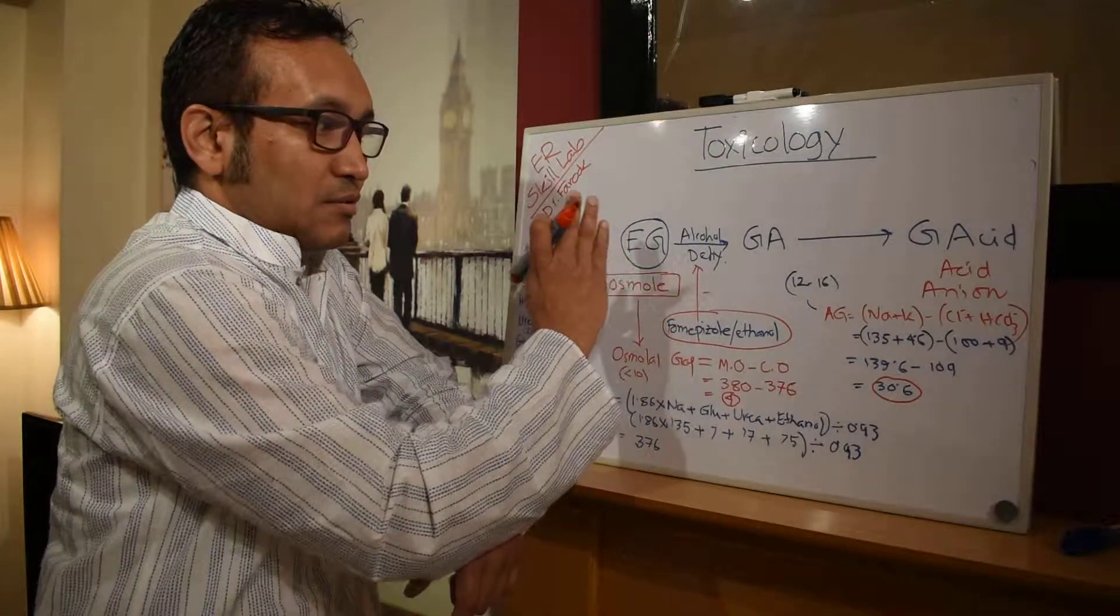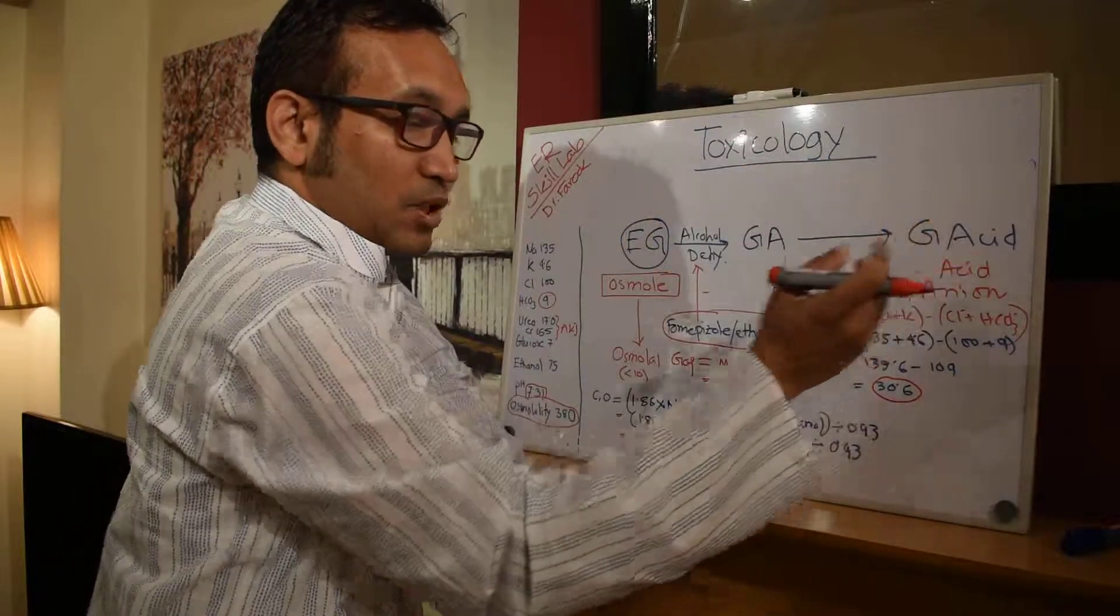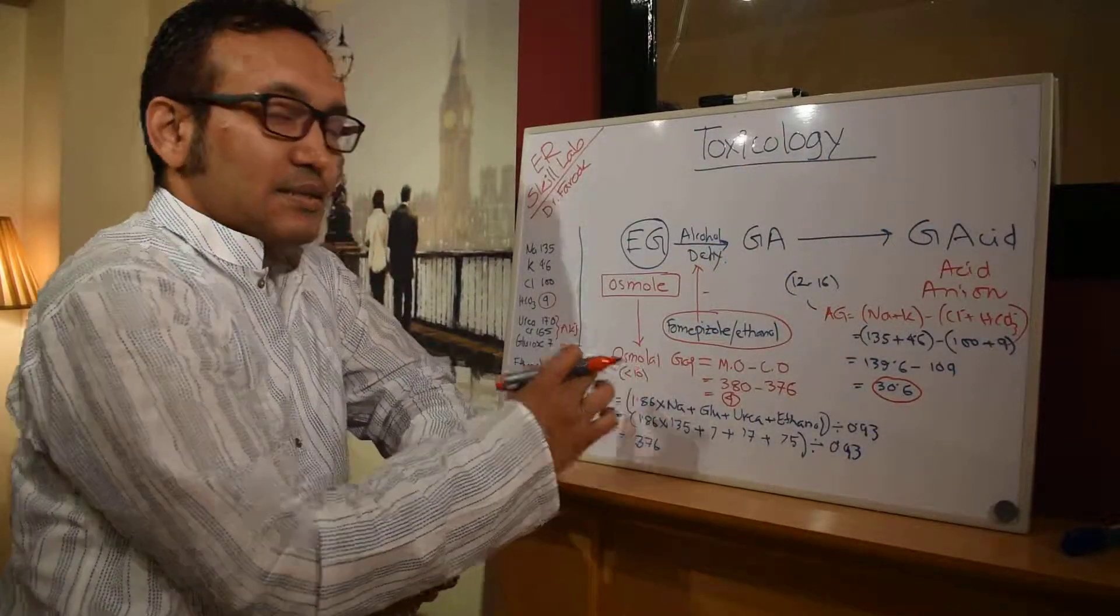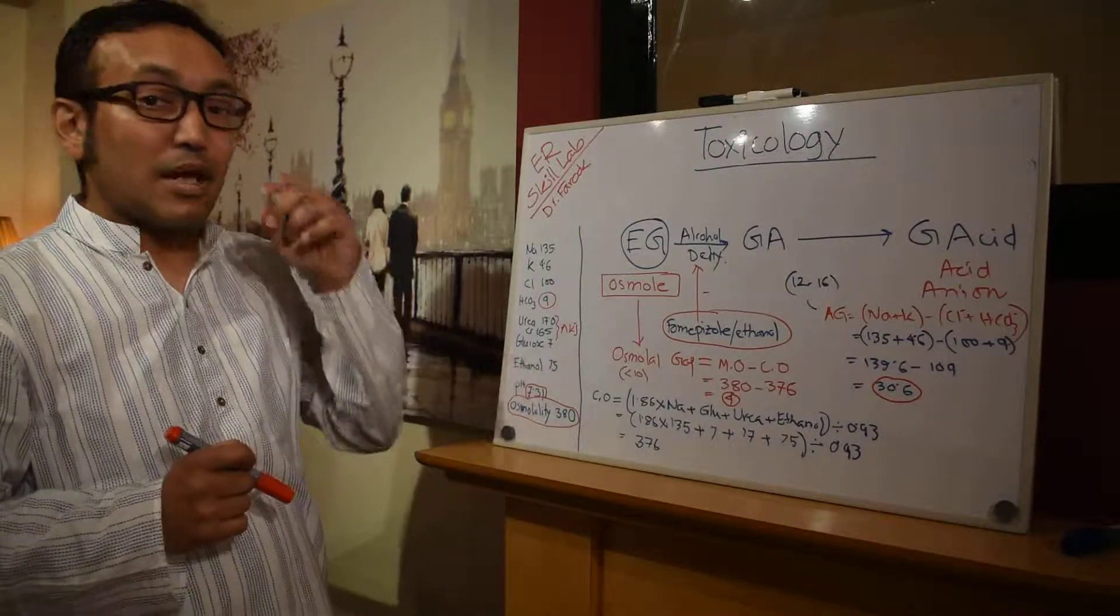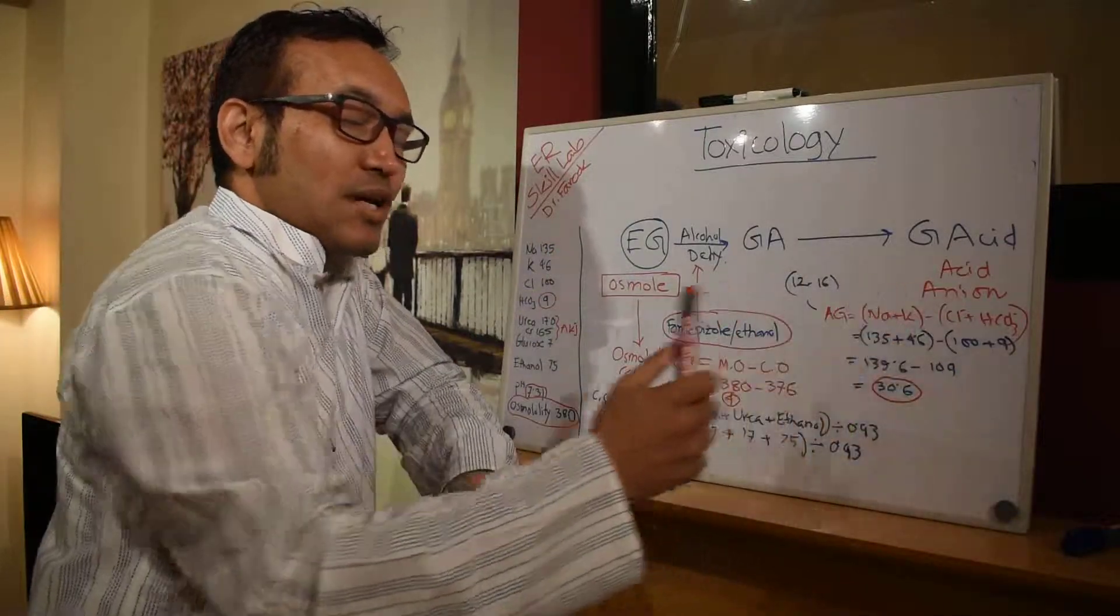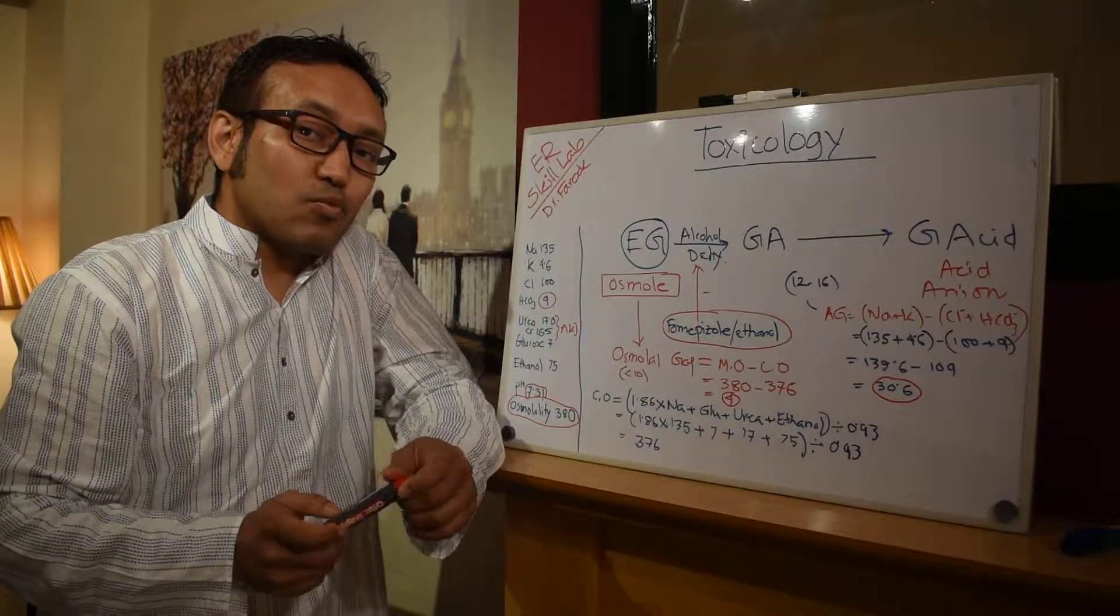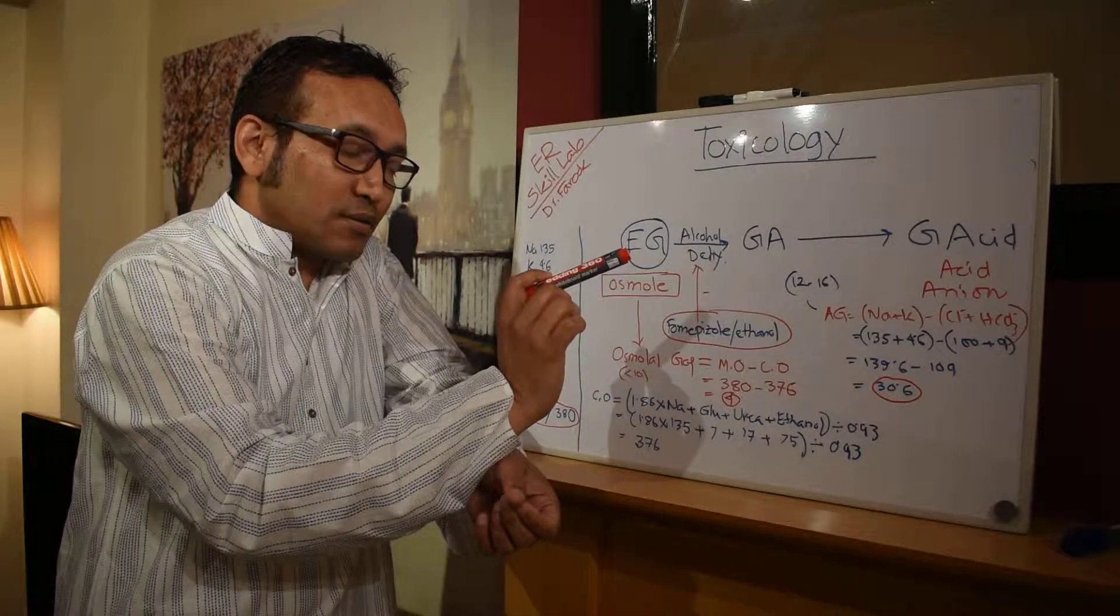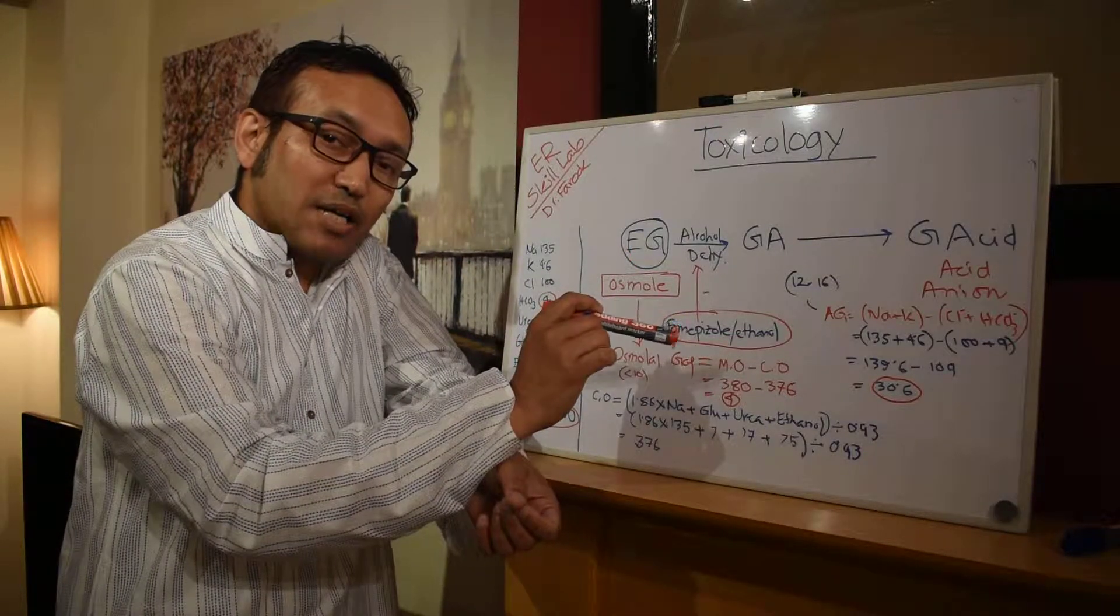And osmol gap becomes 4 which is less than 10 so it's normal. There is no osmols left anymore, all the ethylene glycol has now converted into acid. So at this moment we need to stop fomepizole and start the patient on hemodialysis.